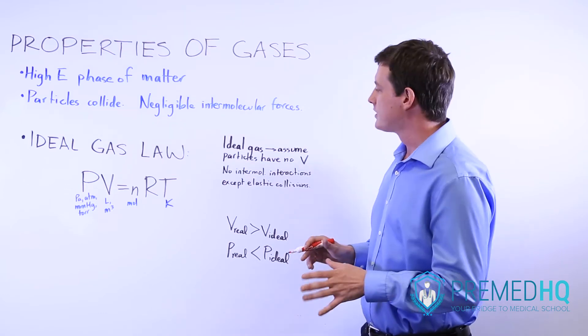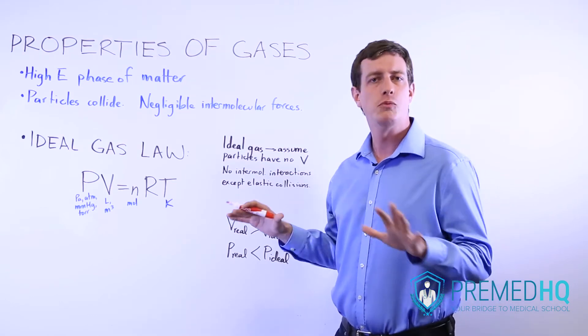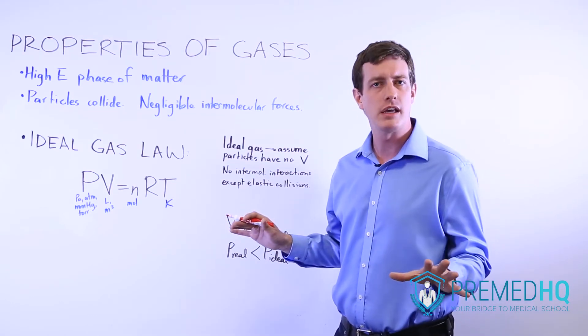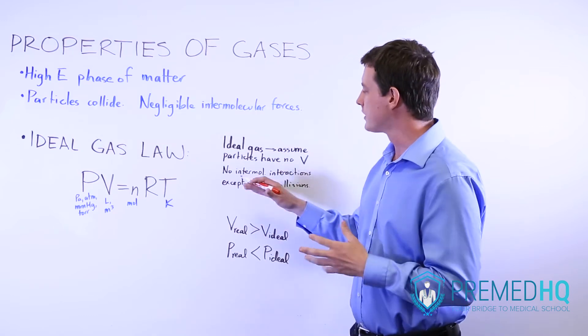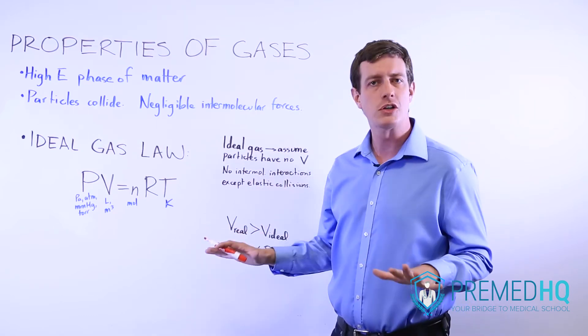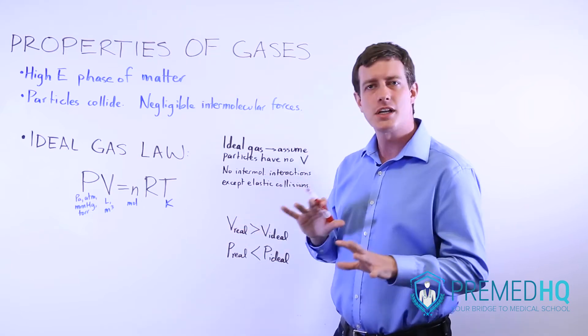And an ideal gas is something where we assume that the particles have no volume whatsoever. They don't take up any space. They're infinitely small. And we also consider that there are absolutely no intermolecular interactions, which is fairly true, but sometimes it's not exact.